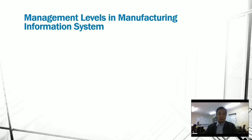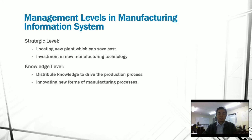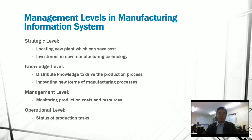There are different management levels in a manufacturing information system, with examples of how it is used at each level. Under the strategic level, organizations are able to locate new plants, save costs, and invest in new manufacturing technology. Under the knowledge level, they distribute knowledge to drive the production process and innovate new forms of manufacturing. Under the management level, they monitor production costs and resources. Finally, at the operational level, it allows them to track the status of production tasks.